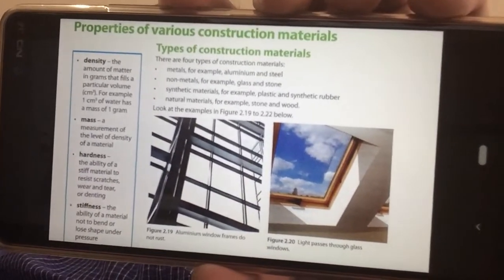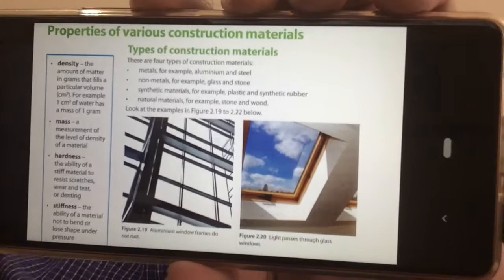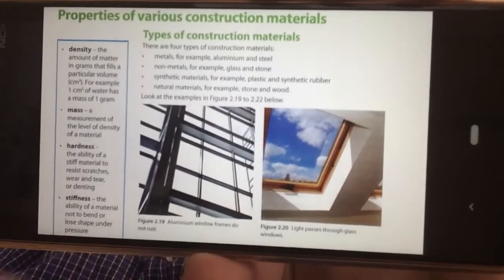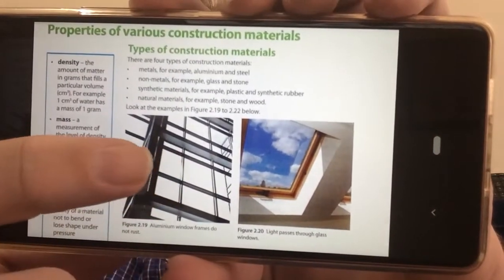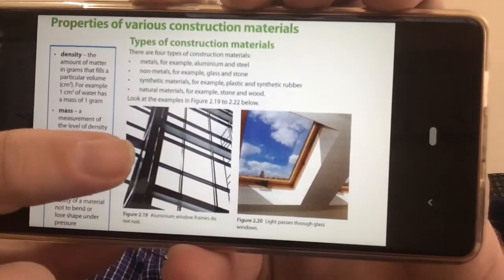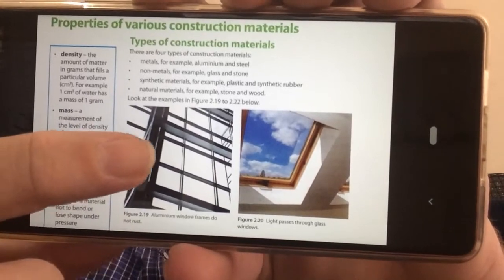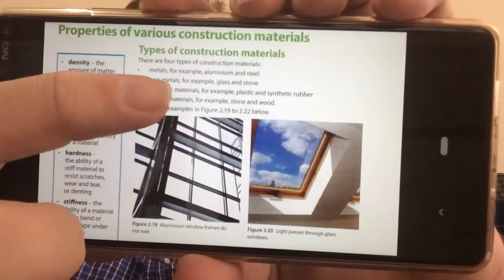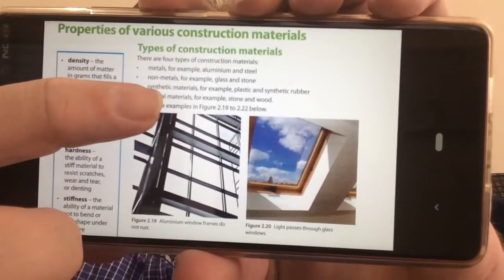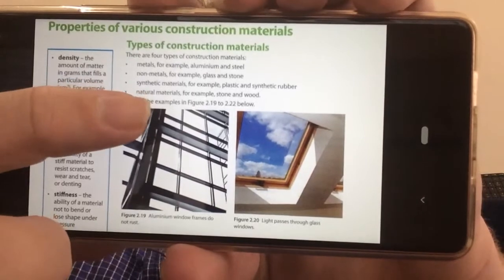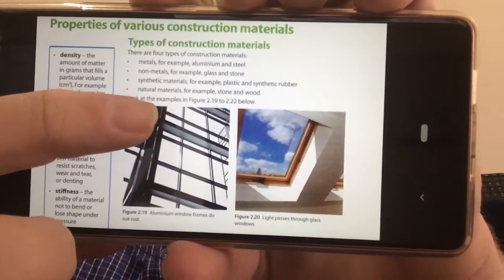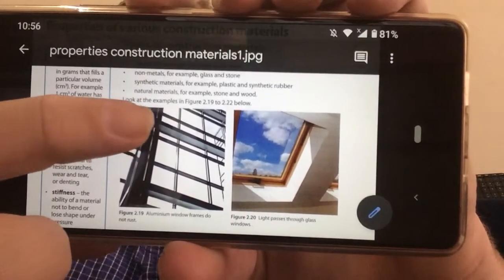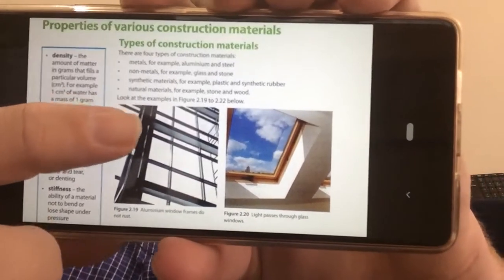Metals, for example, are part of the construction materials, like aluminium and steel. Non-metals like glass and stone. We've got synthetic materials, plastic and synthetic rubber. And we've got natural materials like stone and wood.